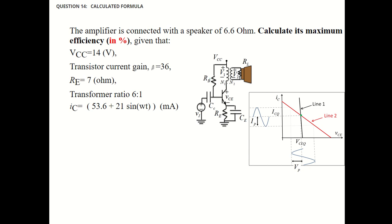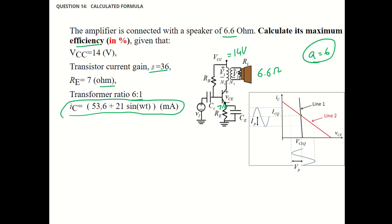The next and last question has the same configuration. The speaker is 6.6 ohm. Calculate the maximum efficiency in percentage. Given: VCC is 14 volt, beta is given, Re is 7 ohm, transformation ratio is the same — A equals 6 — and ICQ is 53.6 milliampere, with the AC component also given as 21.3 milliampere. Efficiency is load power over supplied power, multiplied by 100. We need to find those two things: supplied power and load power.